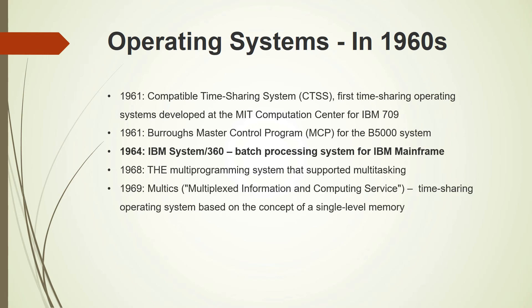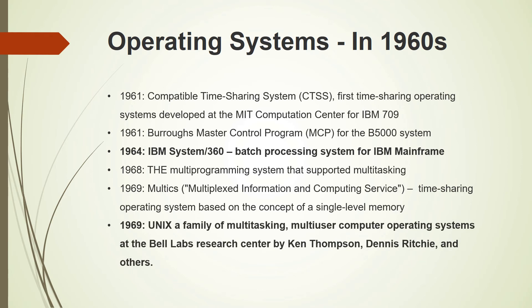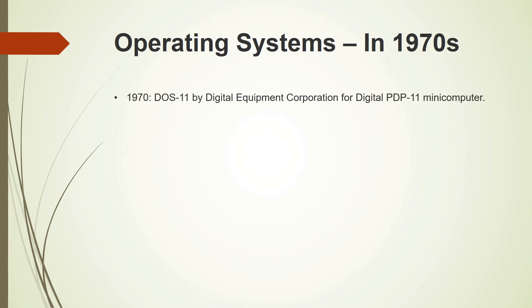In 1968, a multi-programming system was developed that supported multitasking, meaning the OS could support multiple jobs at the same time. In 1969, Multics — a time-sharing operating system — was released. Also in 1969 came the major revolution: the Unix operating system, a multitasking and multi-user OS developed at Bell Labs by Ken Thompson, Dennis Ritchie, and a few other scientists. In 1970, DOS/11 was developed by DEC (Digital Equipment Corporation) for their PDP-11 minicomputer. In 1972, PRIMOS was developed by Prime Computers.